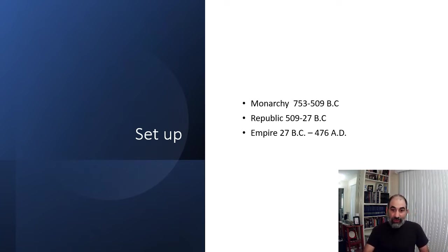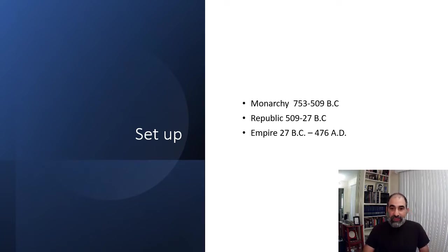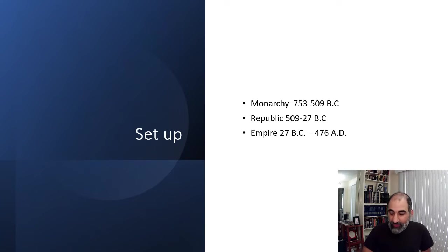For all my students, you don't need to memorize the exact dates — as long as you know the circa dates. We have what we call the Roman Republic, 509 to 27 BC, and then the Empire, which goes from 27 BC to 476 AD. We're going to cover a lot of different information talking about these different stages. We'll spend a lot more time on the Republic and Empire, and not as much time on the Monarchy phase.